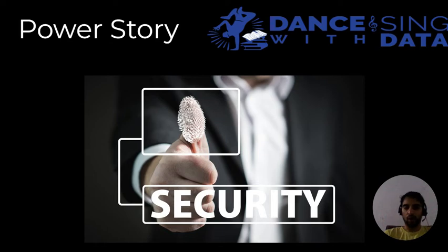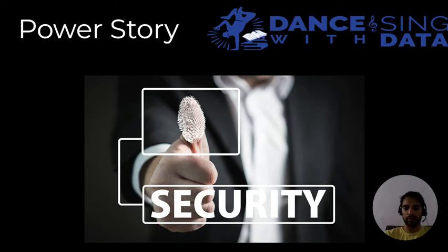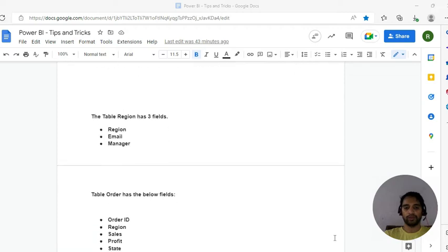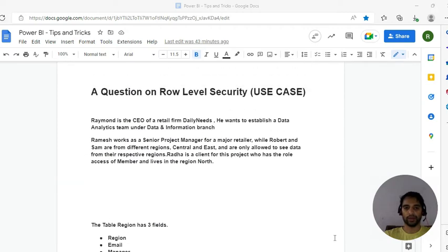Today we have a plan to learn Row Level Security and a use case will be presented to solve questions at the end. Remember, PL-300 certification has two types of questions: regular ones and use-case scenarios. In a use case, you are presented with a scenario and there will be six to seven questions based on that scenario.